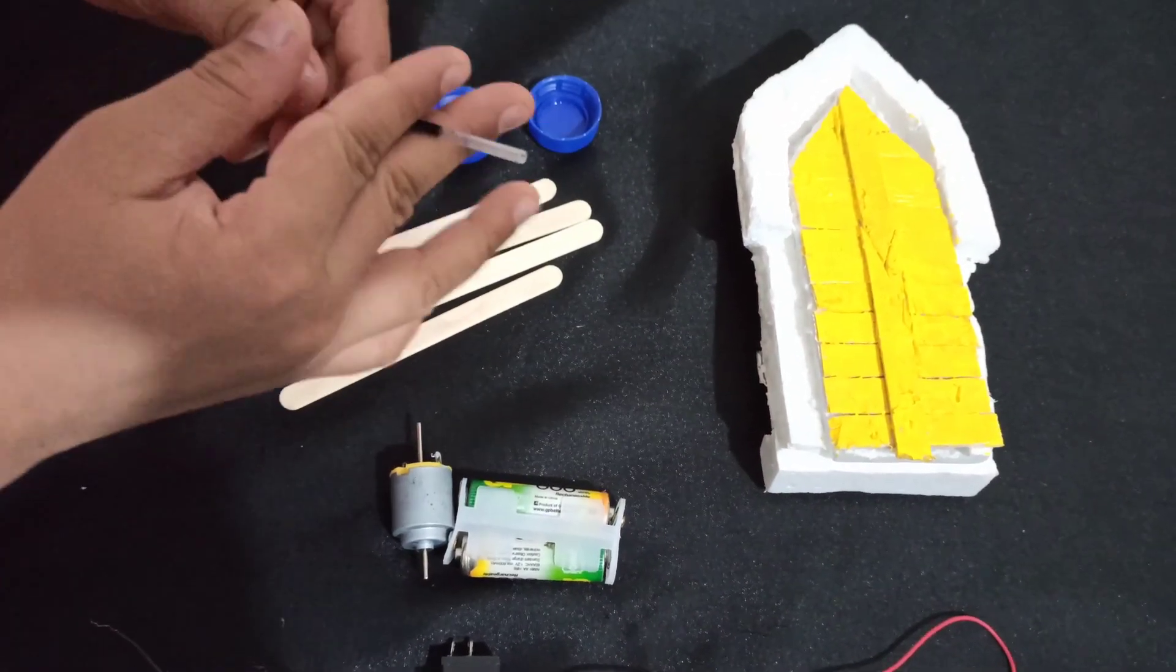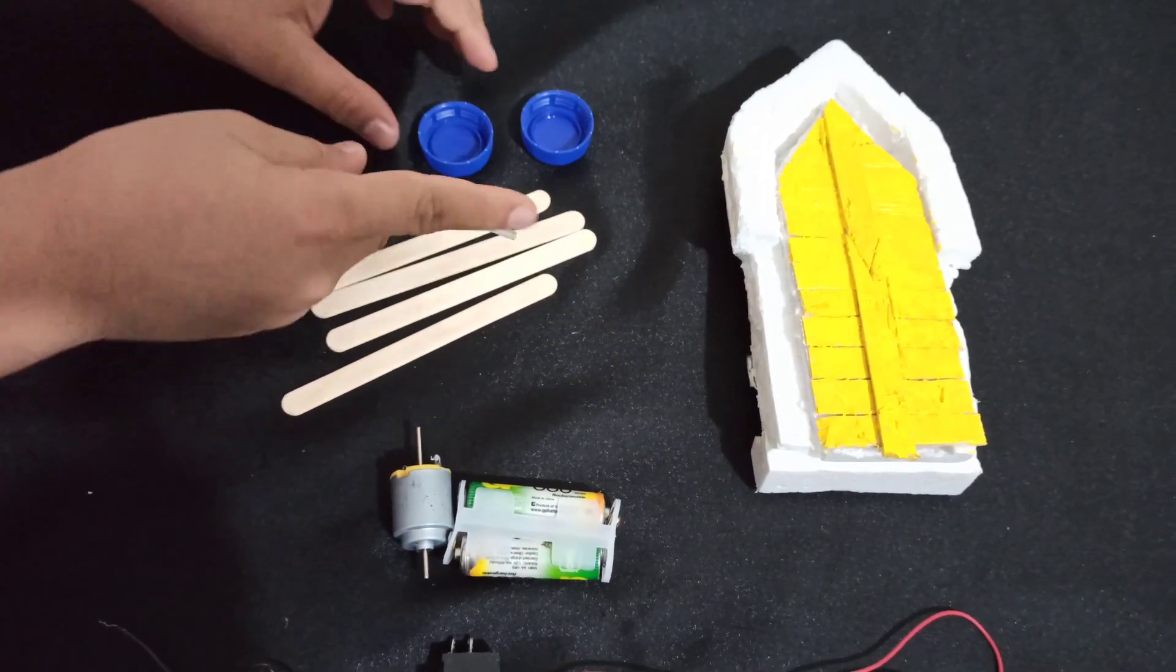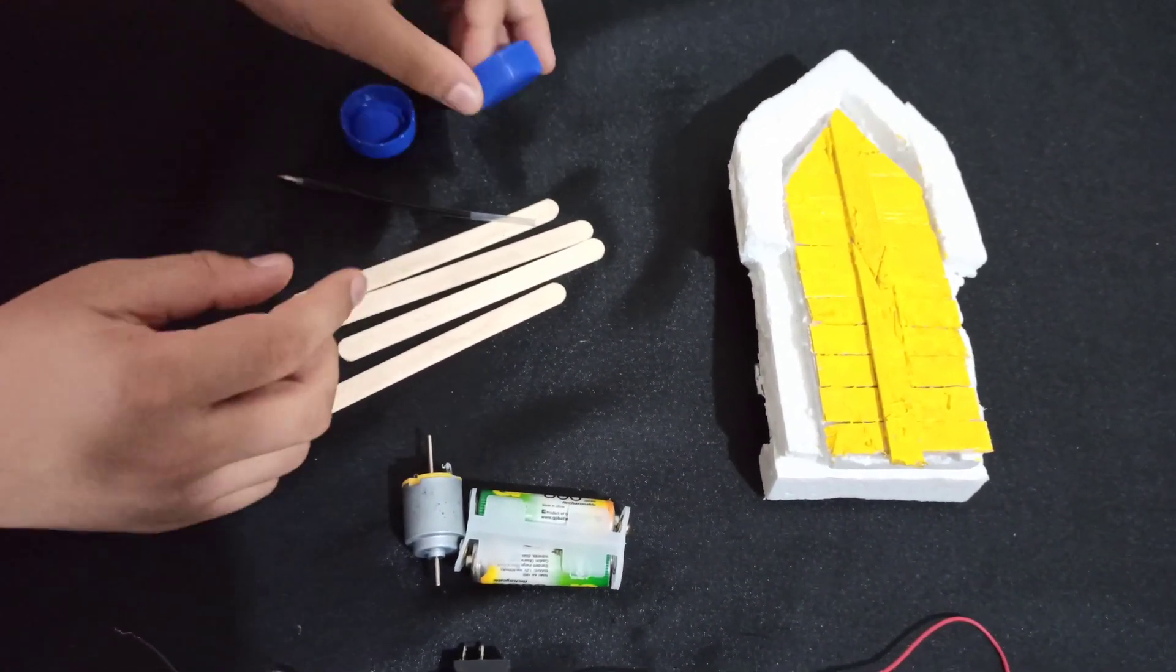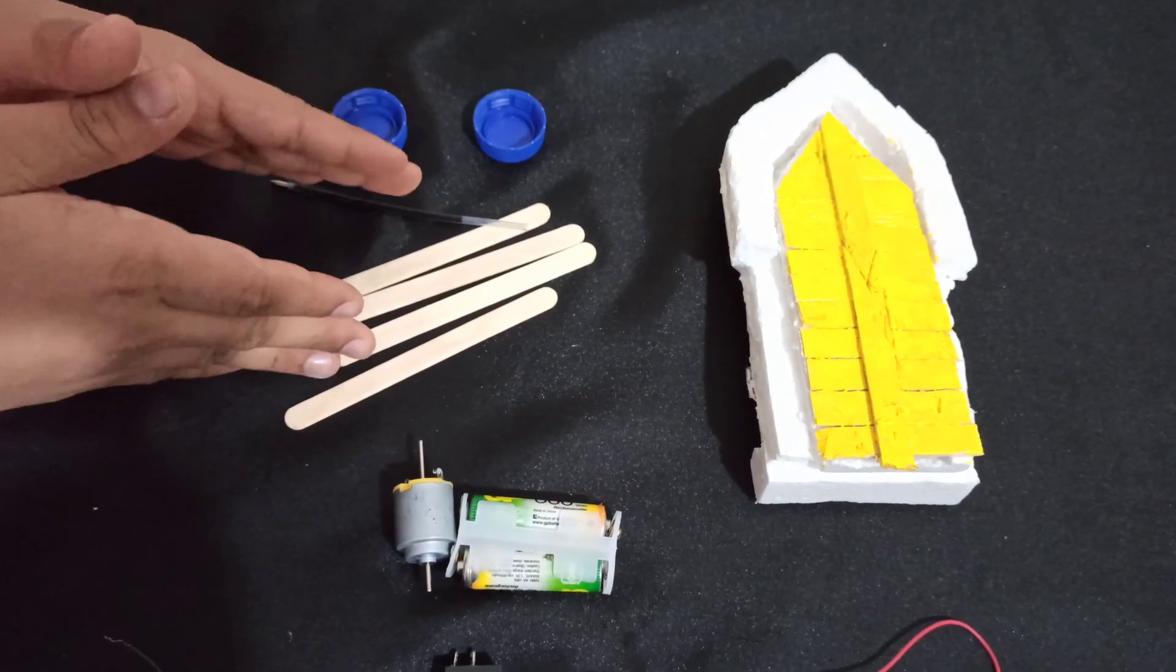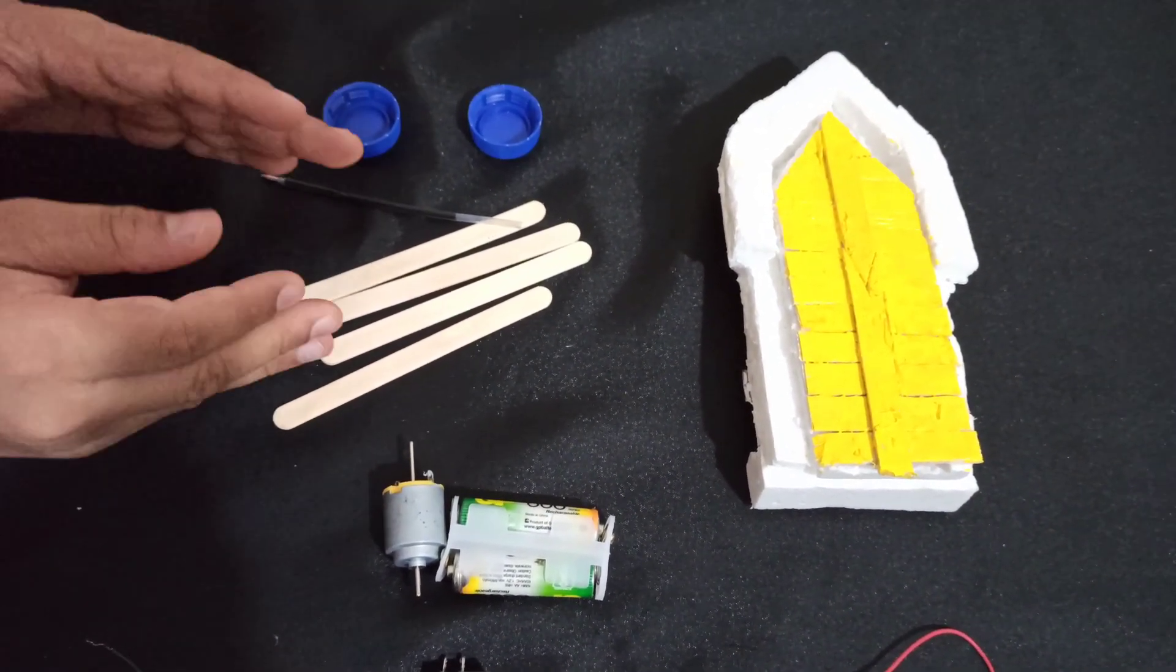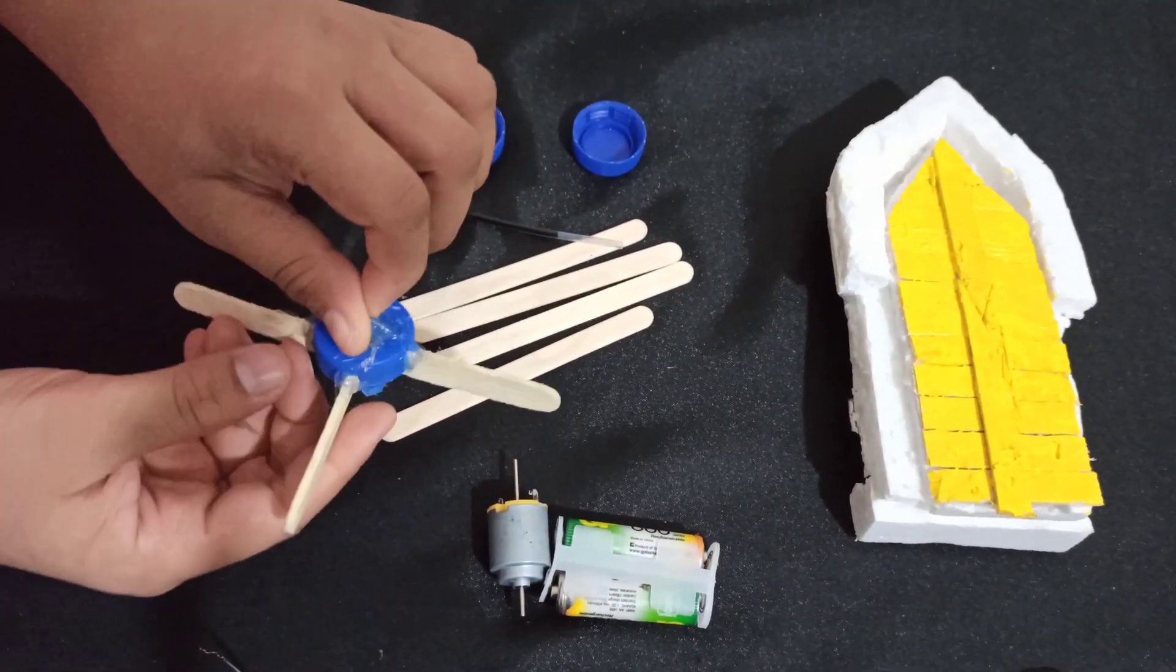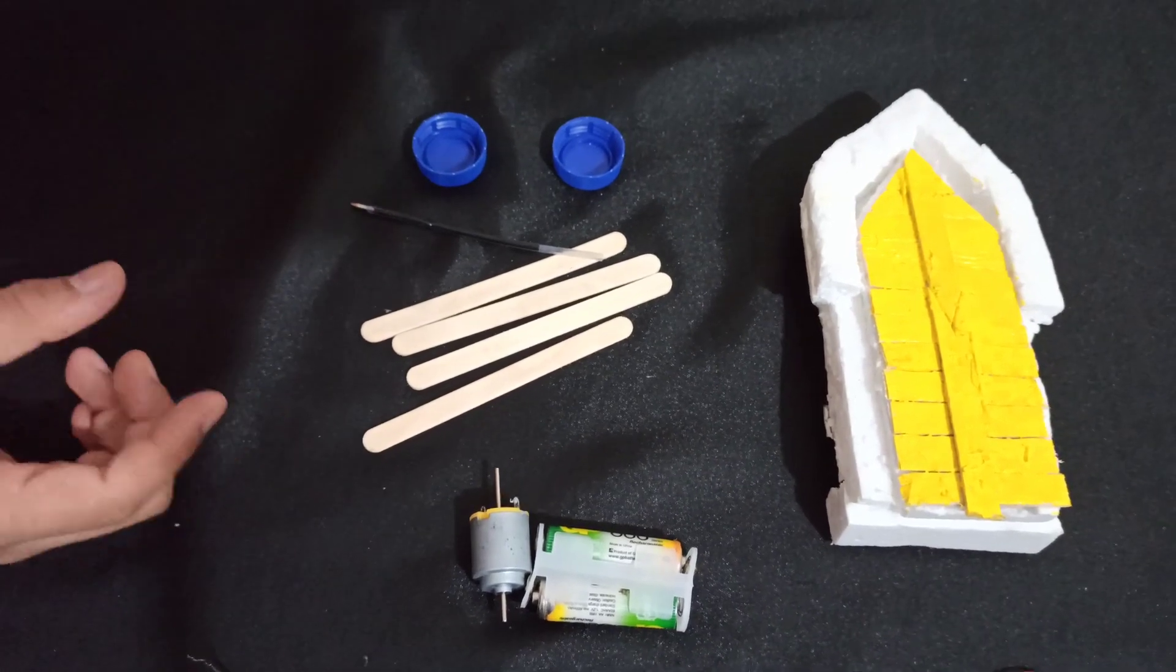Then take your refill and cut it into half. Then make two holes in the cap so that your refill can enter. Then seal everything with glue. It should look like this. Let's do the same for the other cap.